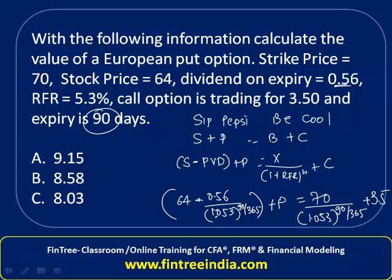Solving on a financial calculator: 64 → STO 1. Then 1.053, y^x, (90 ÷ 365) =, take the inverse and multiply by 0.56. That value comes out to 0.5529. Making this negative and adding RCL 1 gives the entire left-side stock term as 63.44. Save this in memory slot 1.